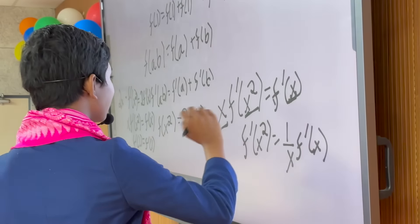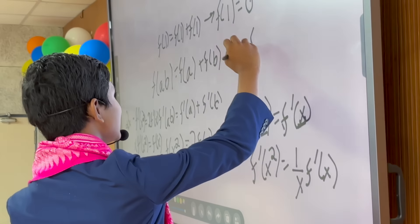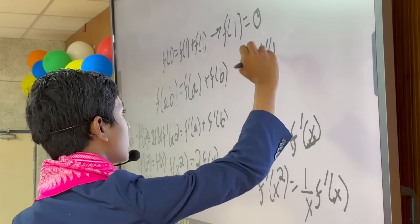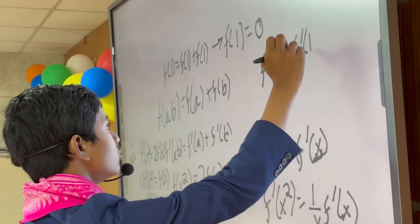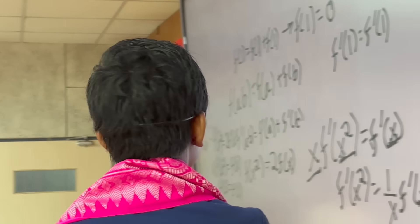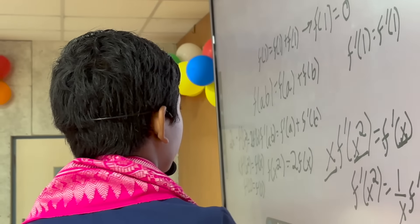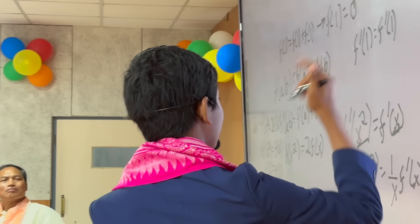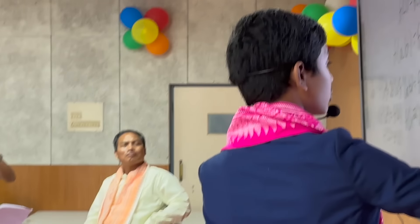Essentially, if f'(1) exists, which proves this equation true, because f'(1) = f'(1), then since this equation x·f'(x²) = f'(x) is valid for all real numbers, that means f' exists at all real numbers.